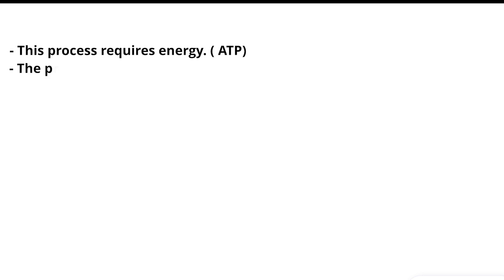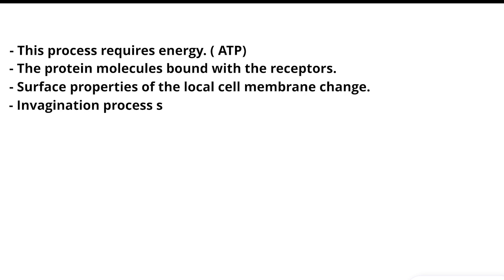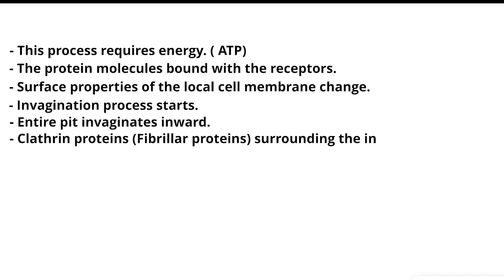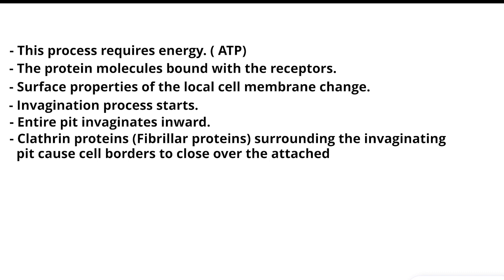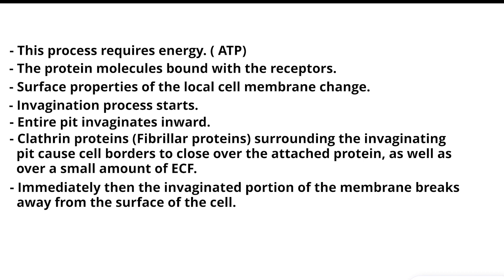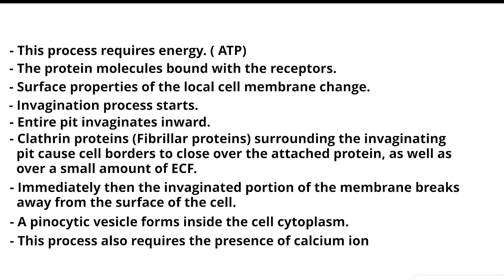This process requires energy — ATP. The protein molecules bound with the receptors cause surface properties of the local cell membrane to change, and the invagination process starts. The entire pit invaginates inward. Clathrin proteins and fibrillar proteins surrounding the invaginating pit cause cell borders to close over the attached protein, as well as over a small amount of ECF. The invaginated portion of the membrane then breaks away from the surface of the cell, and a pinocytic vesicle forms inside the cell cytoplasm. This process also requires the presence of calcium ions in the ECF.